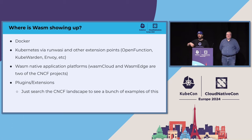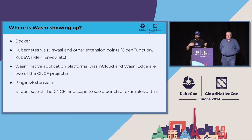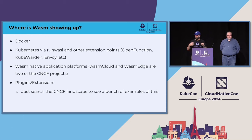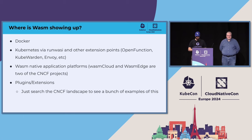It's showing up in Docker and the container runtimes. It's showing up in Kubernetes via RunWASI and other extension points. So if you look in the ecosystem, you'll see it in places like Envoy, Kubeward, and Open Function. You'll also see WASM-native application platforms — WASM Cloud is one that I'm a maintainer of, and there's also WASMEdge. Those are the two that are part of the CNCF. And then there's plugins and extensions — just go to the CNCF landscape and search for WASM and you'll find it in some really interesting places.